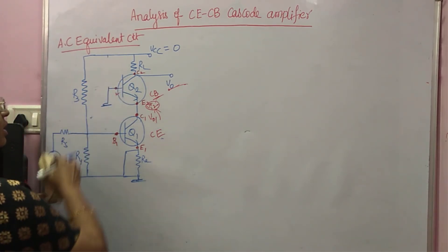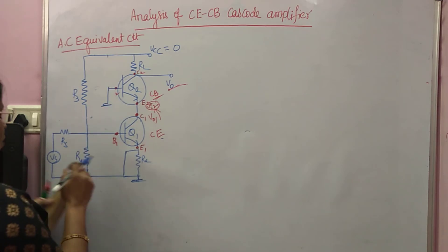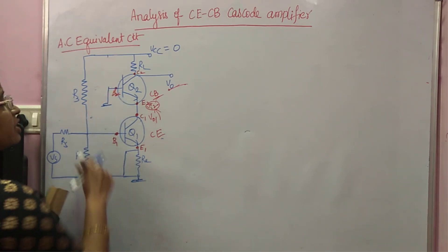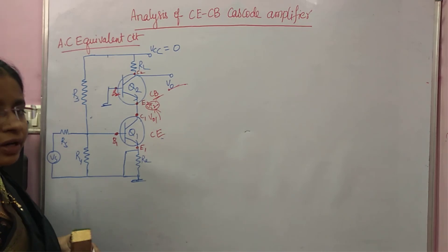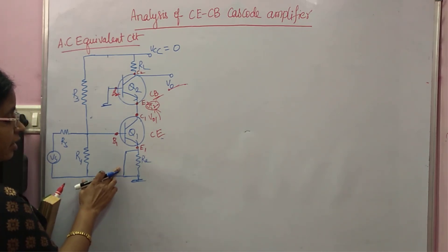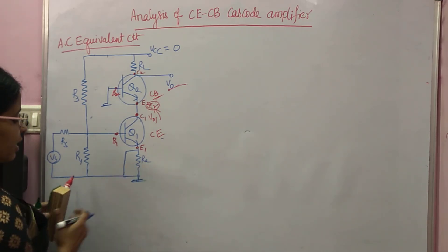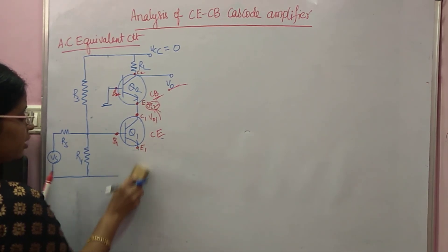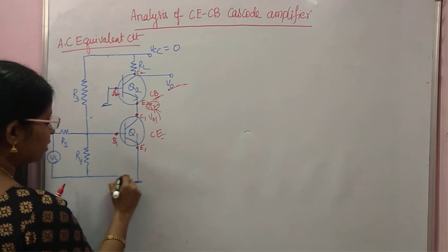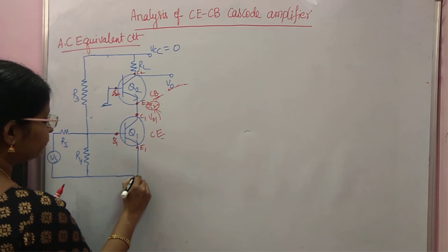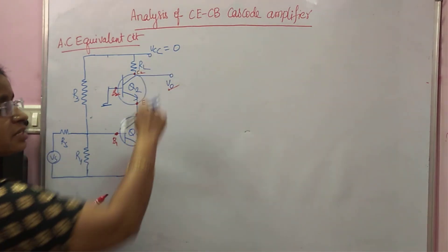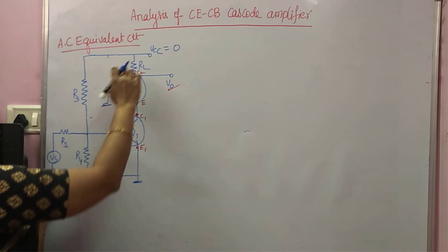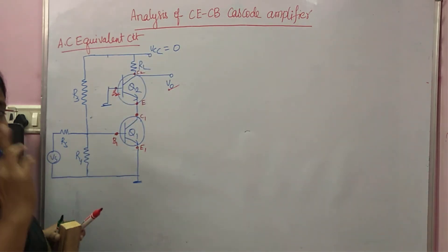Since R1 and R2 are shorted to ground, B2 is directly grounded. Similarly, the capacitor across RE is shorted, so RE is also shorted. With VCC equal to zero, the other ends of R3 and RL are both at ground.